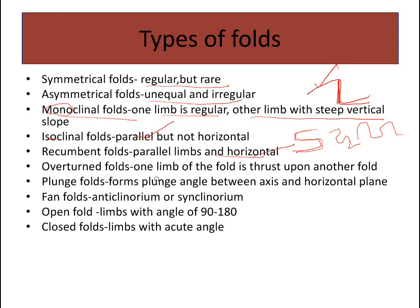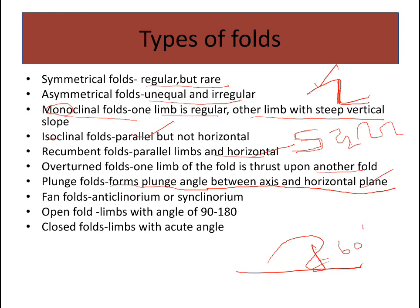Overturned folds have one limb thrust upon another. Plunging folds form a plunge angle between the fold axis and the horizontal plane — the angle the axis makes with the horizontal plane is called the dip. Fan folds have both anticlinorium as well as synclinorium, so we can call them anticlinorium or synclinorium.